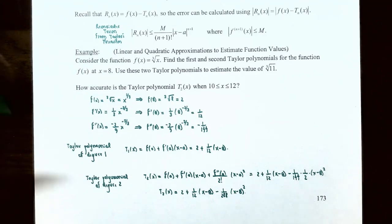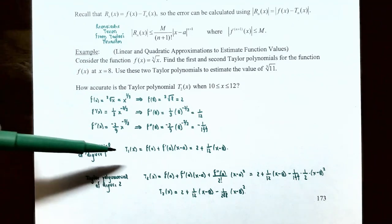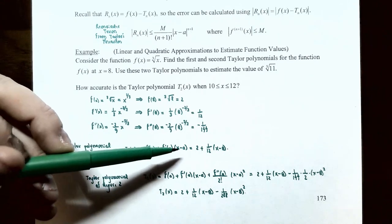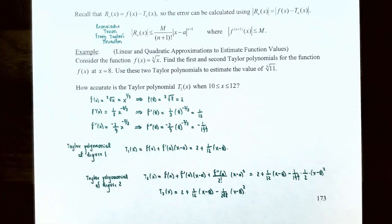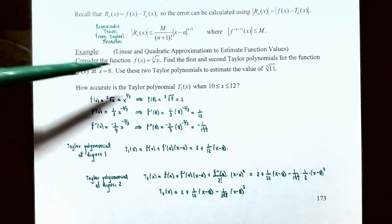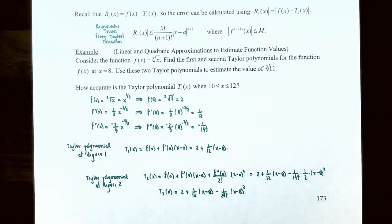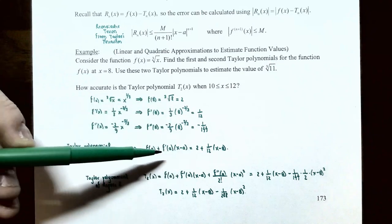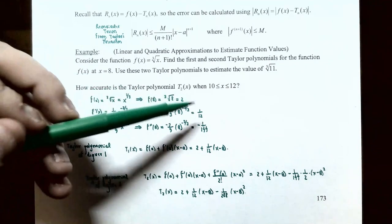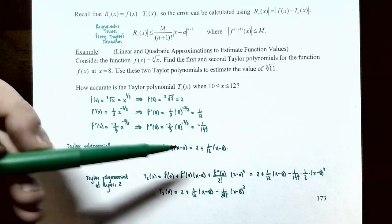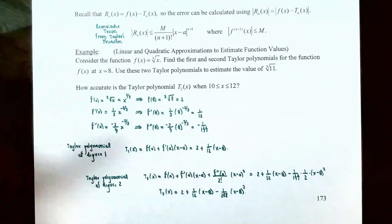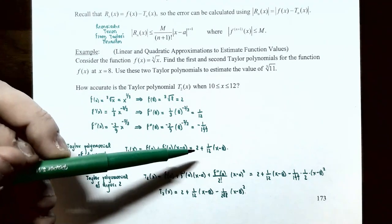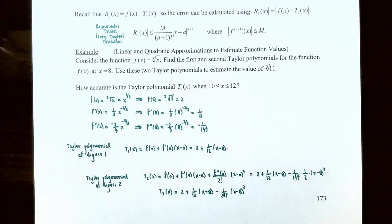The first degree Taylor polynomial is T_1(x) = f(a) + f′(a)(x − a), which is the linearization of f(x) = ∛x at x equals 8. So f(8) = 2 and f′(8) = 1/12, giving T_1(x) = 2 + (1/12)(x − 8).